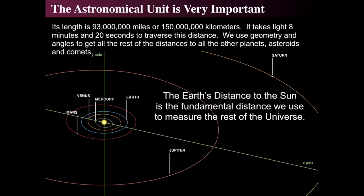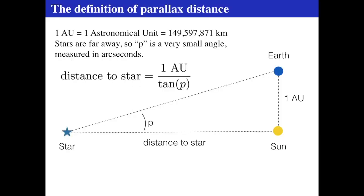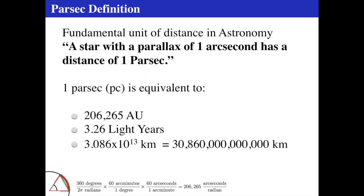The AU allows us to find distances to planets and far stars. If we measure a parallax angle in arc seconds, a star with a parallax of one arc second has a distance of one parsec — we're defining a unit based on a fundamental measurement. Parsec stands for 'parallax of one arc second.' One parsec is equivalent to roughly 206,265 AU, three and a quarter light years, or 31 trillion kilometers.